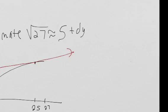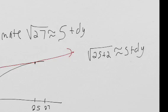Well, it's helpful to look at square root 27 as 25 plus 2. And that's about equal to 5 plus dy. Well, we think of this 2 as a small change in x.